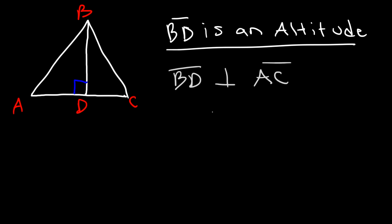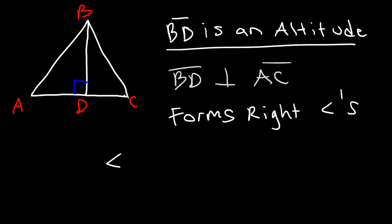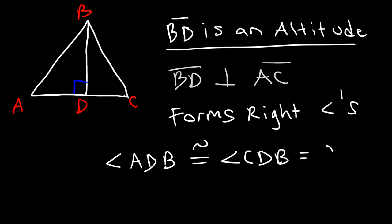Any time you have perpendicular lines, it forms right angles. So angle ADB is congruent to angle CDB because they both equal 90 degrees. An altitude simply connects the vertex of one side of the triangle to the opposite segment and forms right angles. BD is perpendicular to AC.